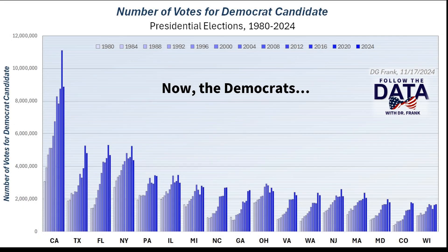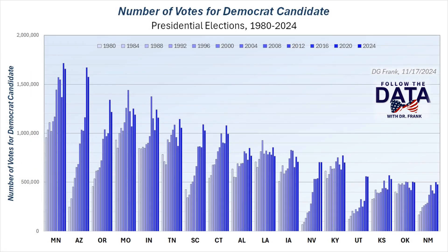Now let's examine the analogous graphs for the Democrat presidential vote turnouts by state. Again, the general trends are up, because the state populations are generally increasing. But in contrast to the Republican trends, nearly every state saw a decrease in votes for Kamala in 2024 versus what Biden had received in 2020. This outcome persists in nearly every state in the country, even D.C., with the exception of Wisconsin, North Carolina, and Nevada.